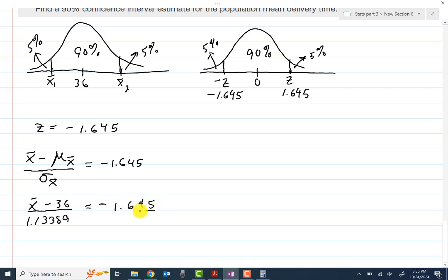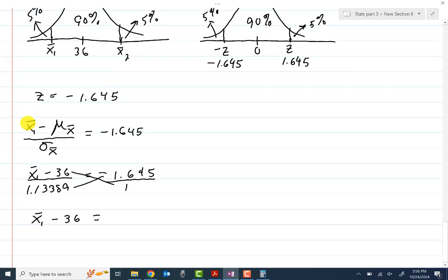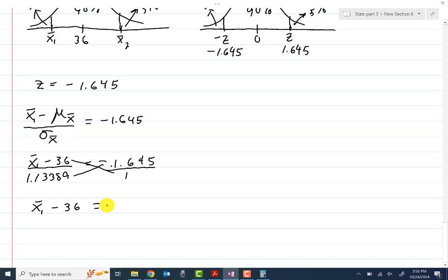This is what I get to five decimal places. At this stage, I'm getting ready to solve the equation. So I'll write it over 1 so I can make use of cross multiplication. And I should be careful here. I'm dealing with the negative. That's x1. So I'm going to put a little 1 down here. So I don't lose track of which one is which by the time I'm done here. So we'll have negative 1.645 times 1.13389.